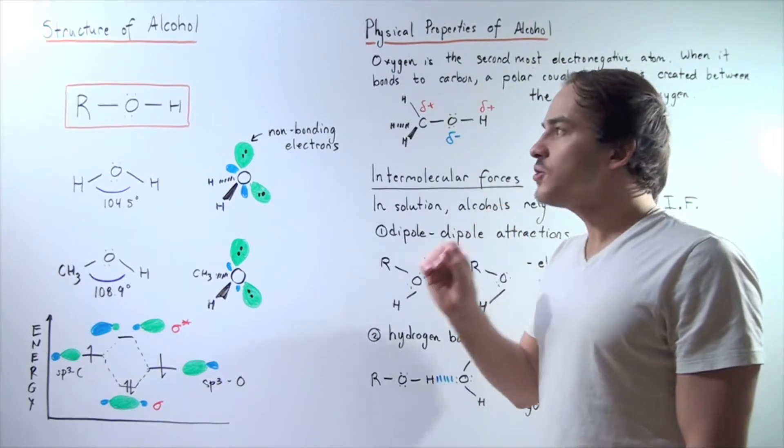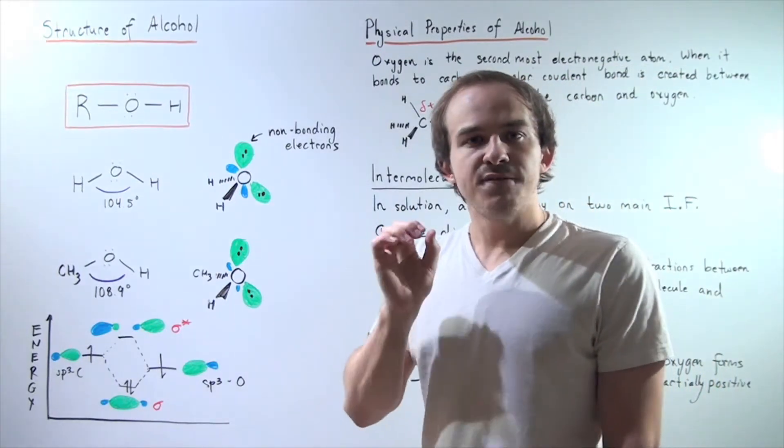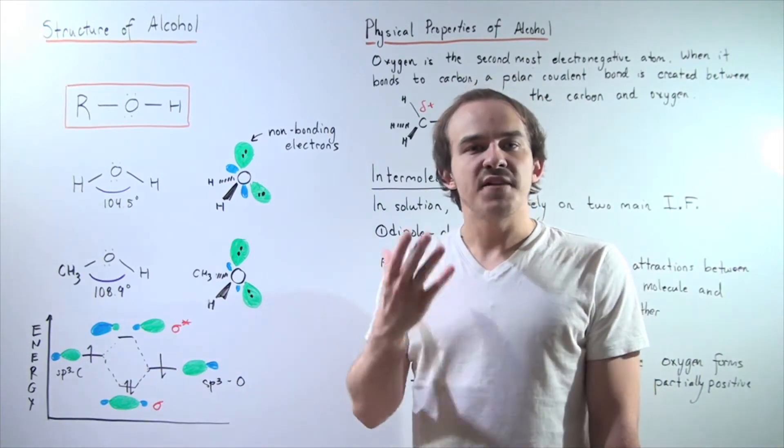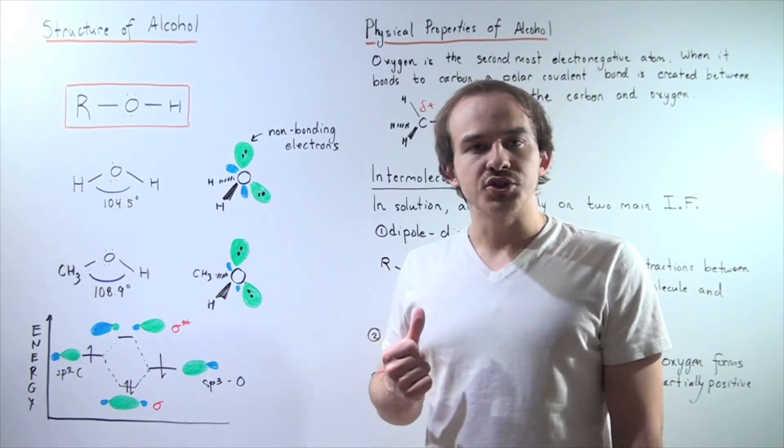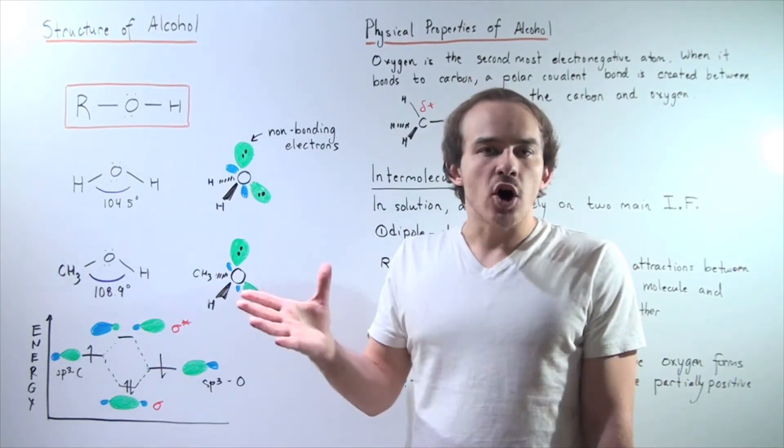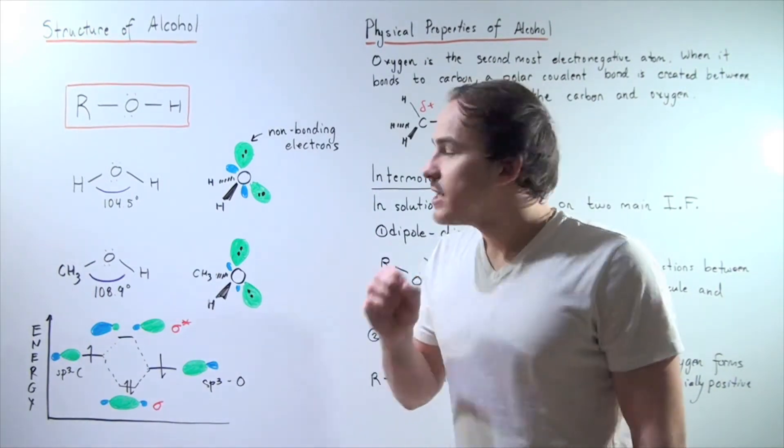Before we do, let's recall that oxygen is a very electronegative atom. That means that it has very high affinity for electrons. It will attract electrons more so than carbon or H atoms.